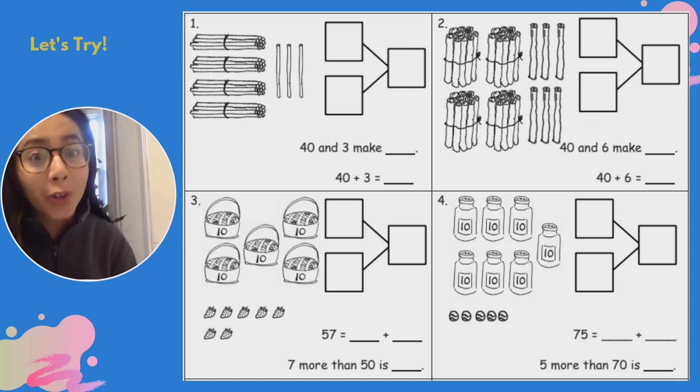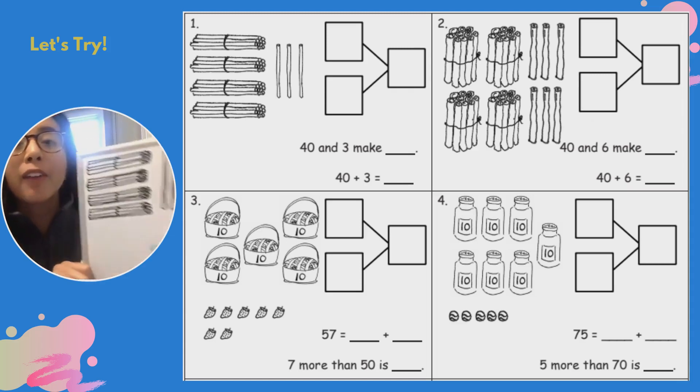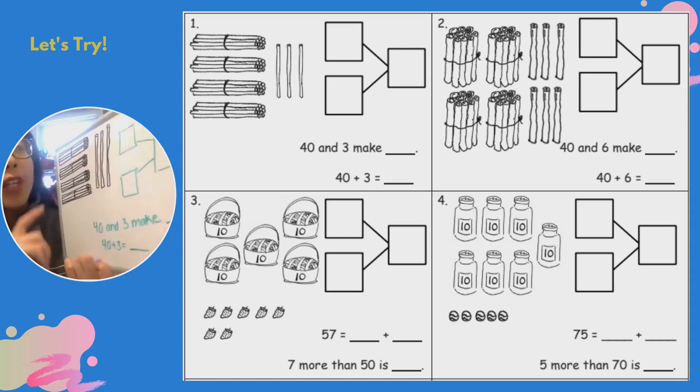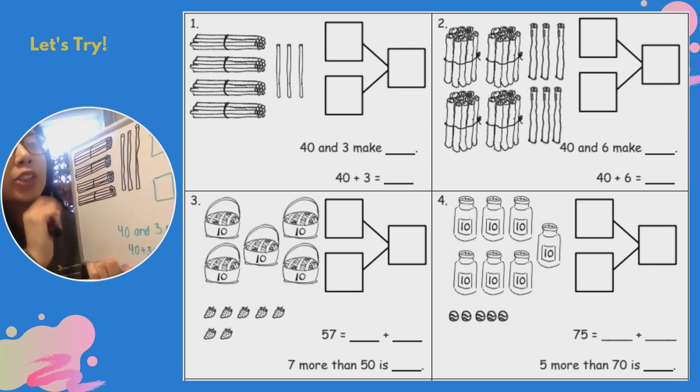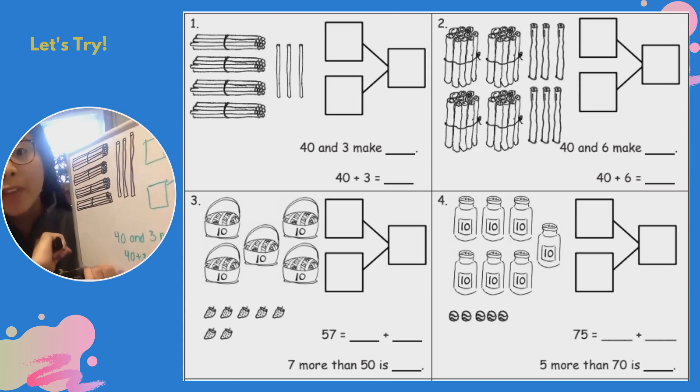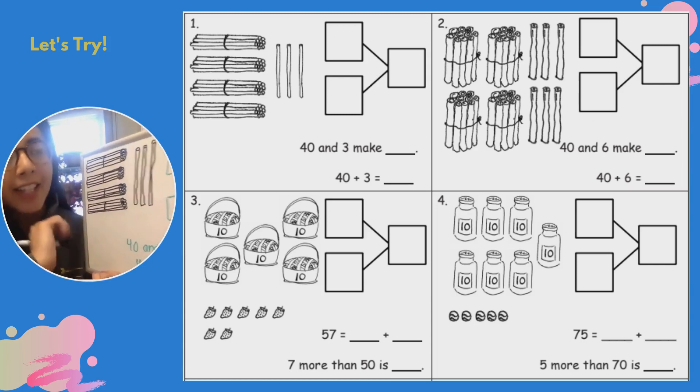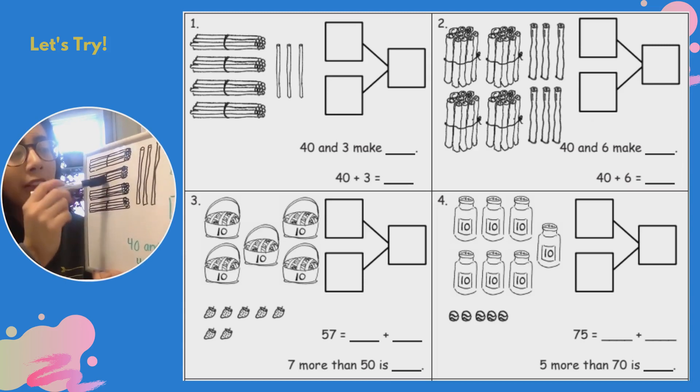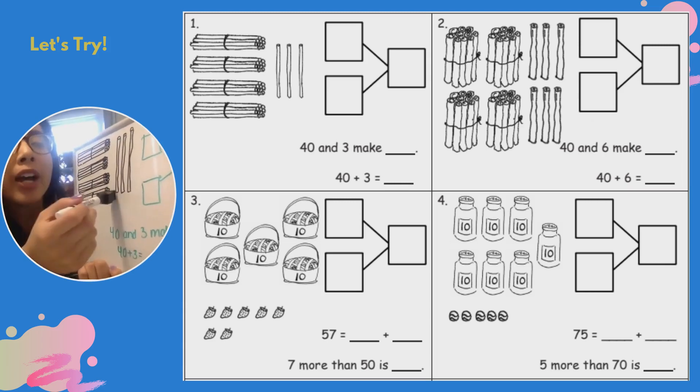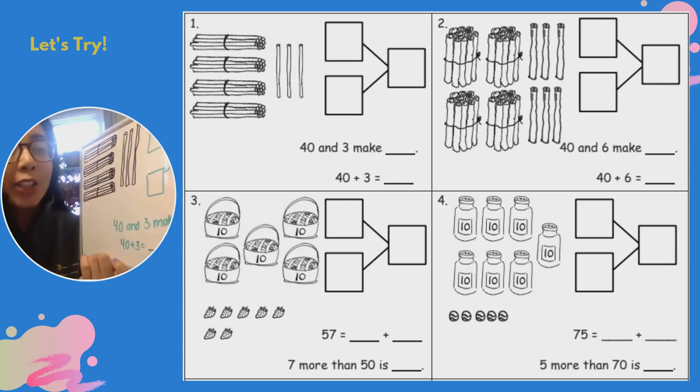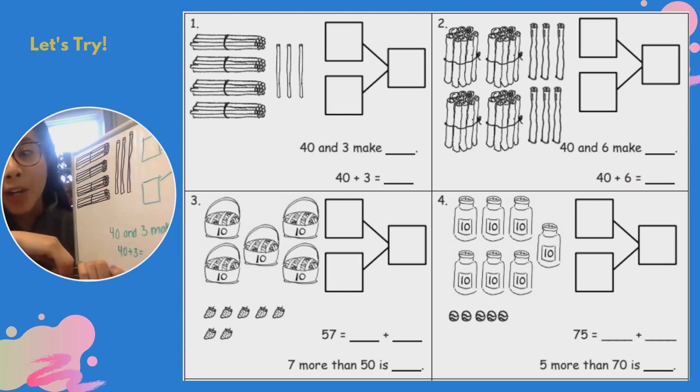So we have in that picture right there, we have some bundles of sticks and some loose ones right there. So in each bundle of stick we have a group of 10. So this is a group of 10, that one, that one, that one are groups of 10, and then of course we have our loose ones.